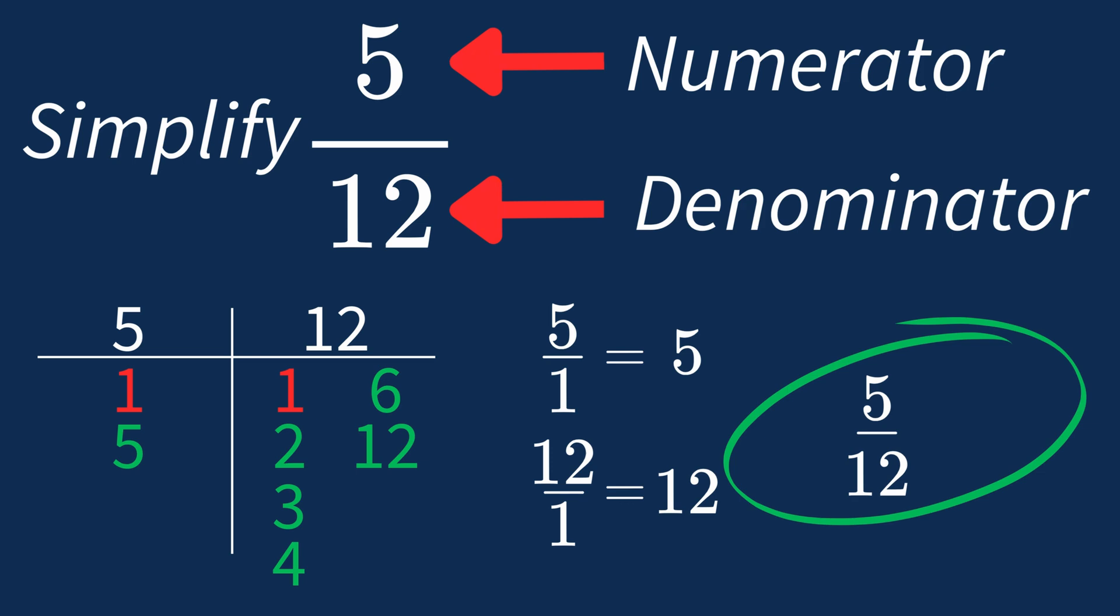In future, if the greatest common factor is 1, you know that fraction is already in its simplest form.